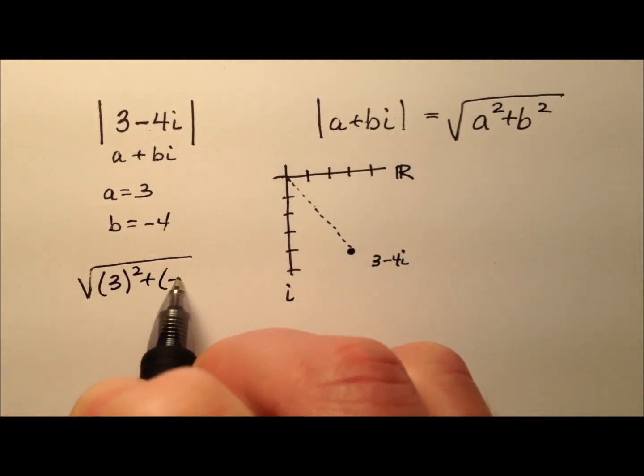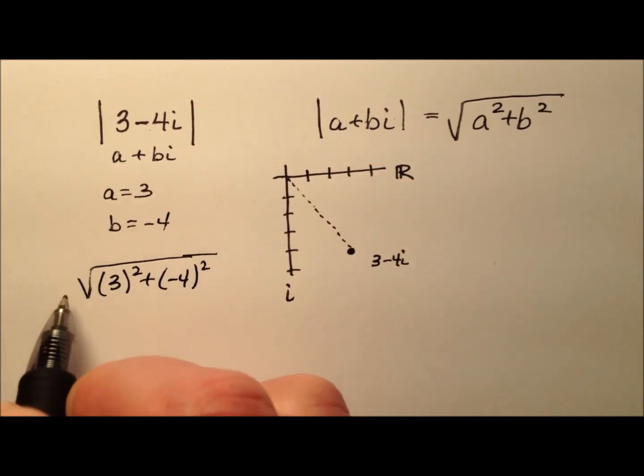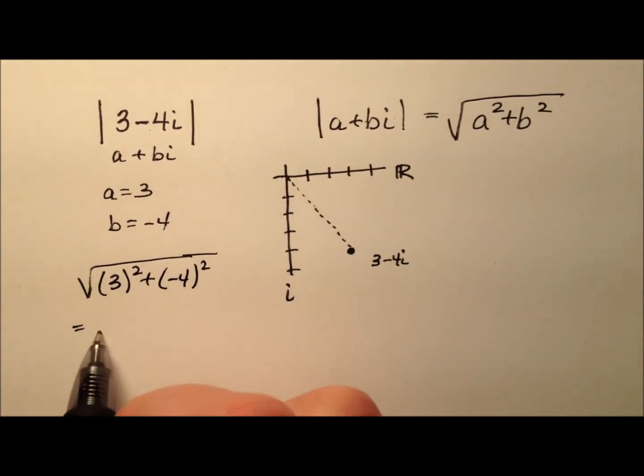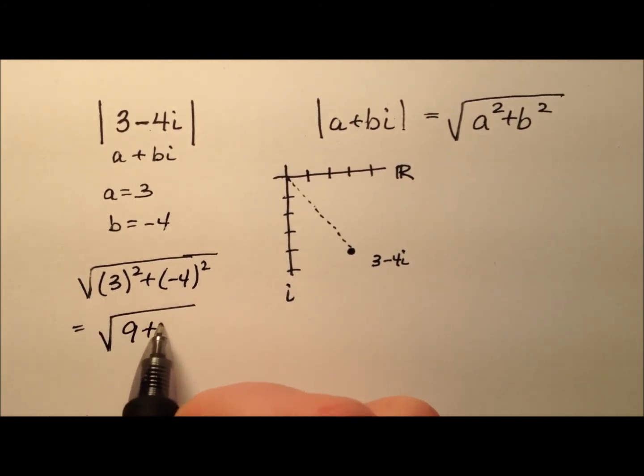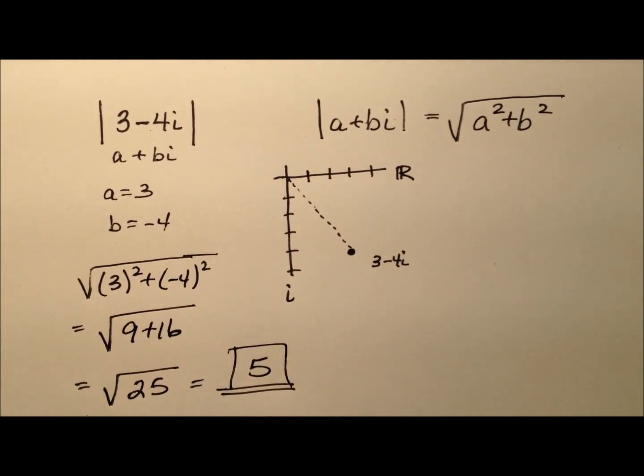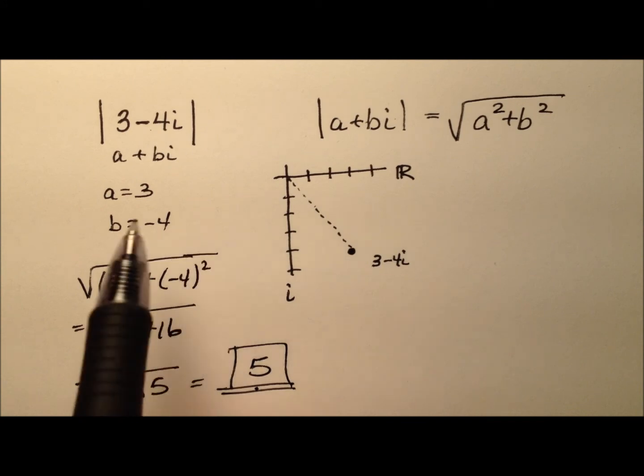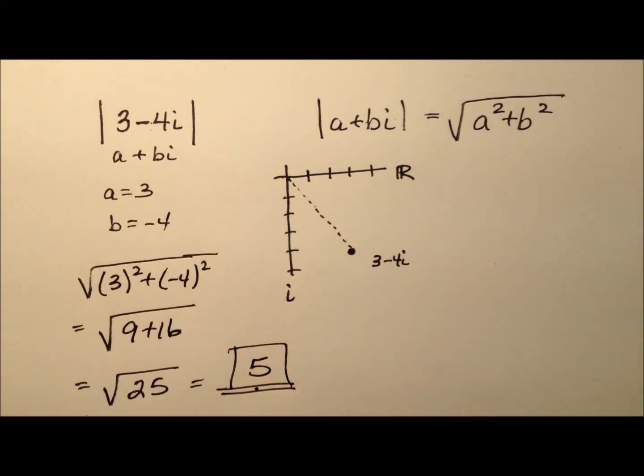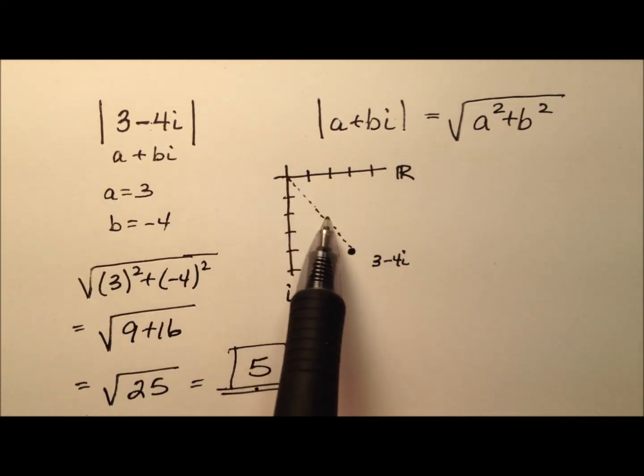3 squared plus negative 4 squared should end up being the square root of 9 plus 16, which of course is the square root of 25, which is a nice number. That's just 5. So we're saying the absolute value of the complex number 3 minus 4i is 5, and that's the length of this line right here.